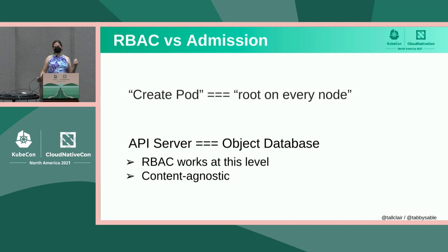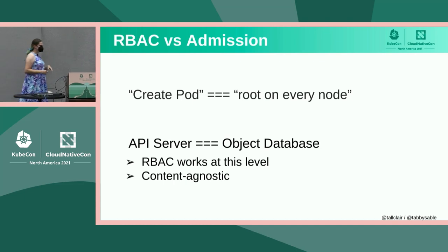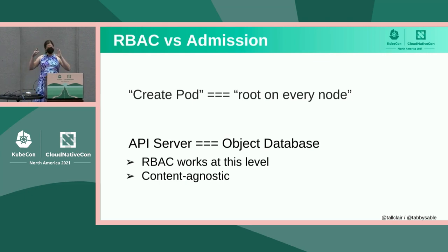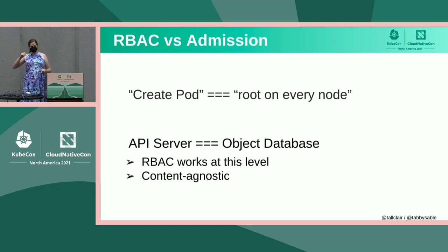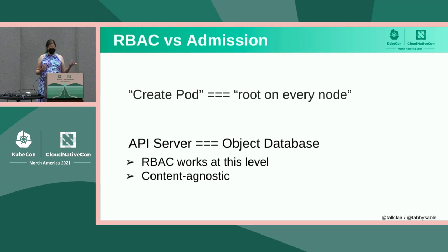The reason for that is that fundamentally the API server is like a really opinionated object database. It has a bunch of object types — pods, deployments, replica sets, all the things that you're familiar with. And that's the level that RBAC works at; it just treats it like a database. But the reality is that the objects in these databases become things in the real world because there are controllers that actually see these and act upon them. And RBAC has no opinions about the contents of those objects, but you might have opinions on the contents of those objects.